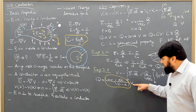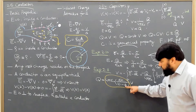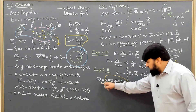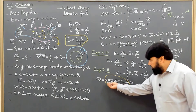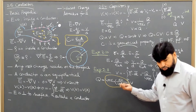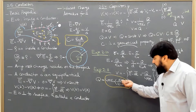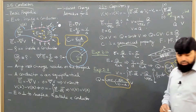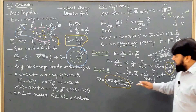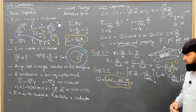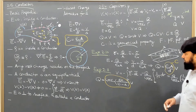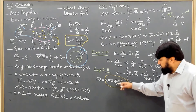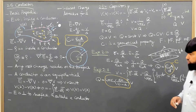Comparing with Q = CV, the capacitance is C = 4πε₀AB/(B − A). This is again a purely geometrical property — it depends only on ε₀ and the radii of the spheres. Changing the geometry changes the capacitance.